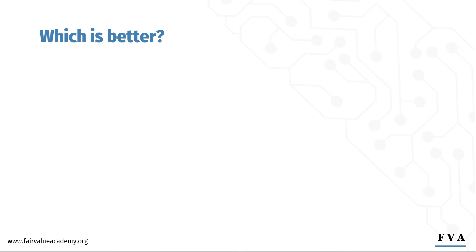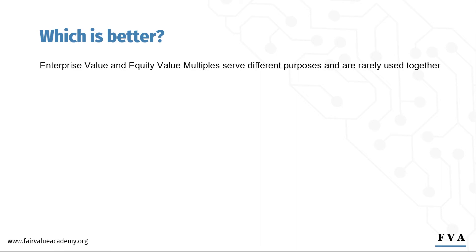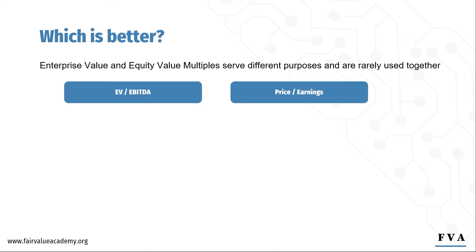So which is better? One thing to note is that enterprise value and equity value multiples serve different purposes and are rarely used together. The most common enterprise value multiple is EV/EBITDA and the most common equity value multiple is price-to-earnings. Before we discuss the differences, I want to elaborate on the EV/EBITDA multiple. It is the most commonly used multiple in M&A, and for a good reason.